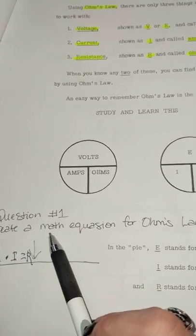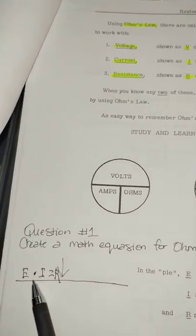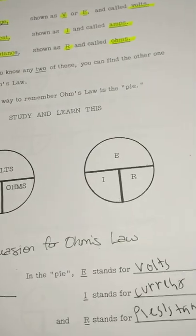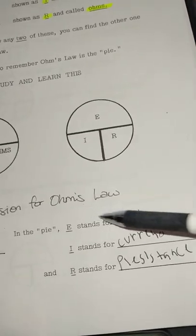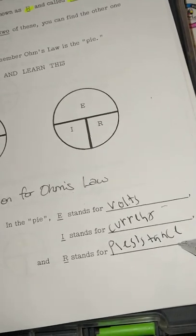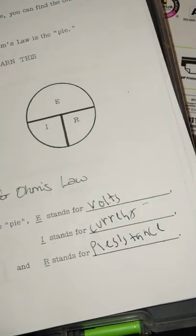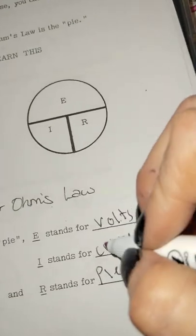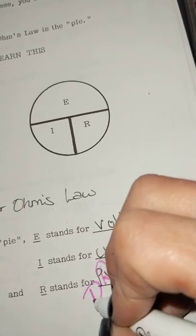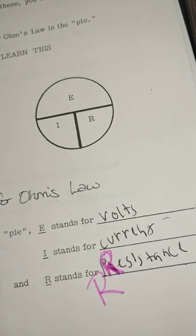Question number one. Write an equation for Ohm's law. E times I equals R. E stands for volts. I stands for currents. And resistance. There we go.